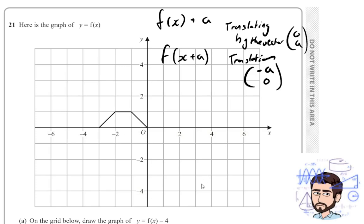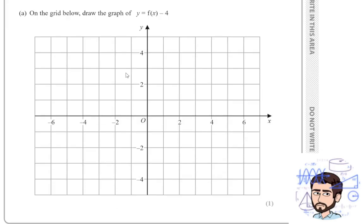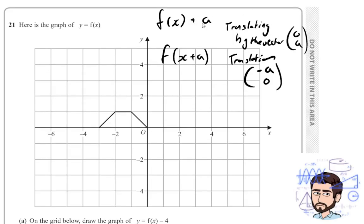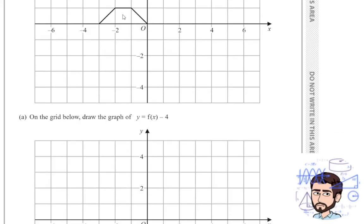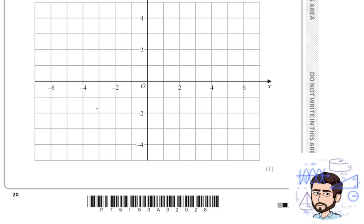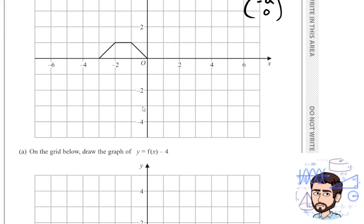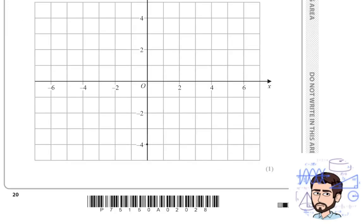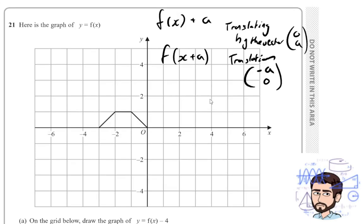So it's just about understanding graph transformations. So we've been asked to do a sketch of f of x minus 4. Well that is just happening on the outside of the brackets. So we're actually going to translate it in the y direction four spaces down. We just need to take this shape here and translate it four spaces down. I would take one corner of the shape and move it four spaces down. So it's going to end up here, here, here and here, and we get a shape that looks like this. So that is the first kind of transformation — when it's plus or minus something, it's a translation by a vector, either in the x or the y direction, depending on where the plus a is situated in the f of x notation.